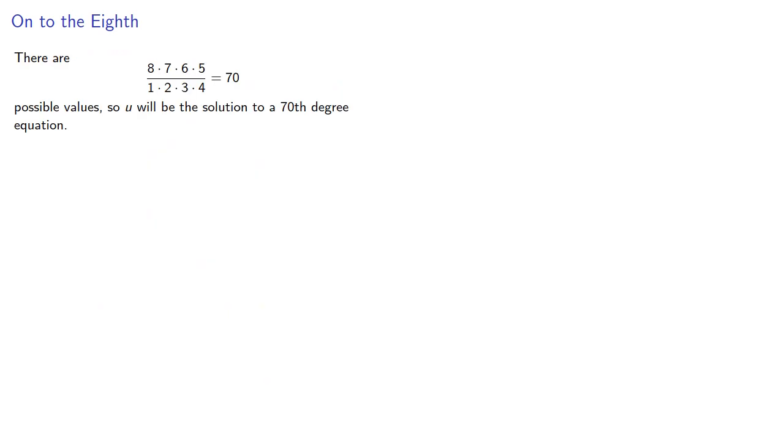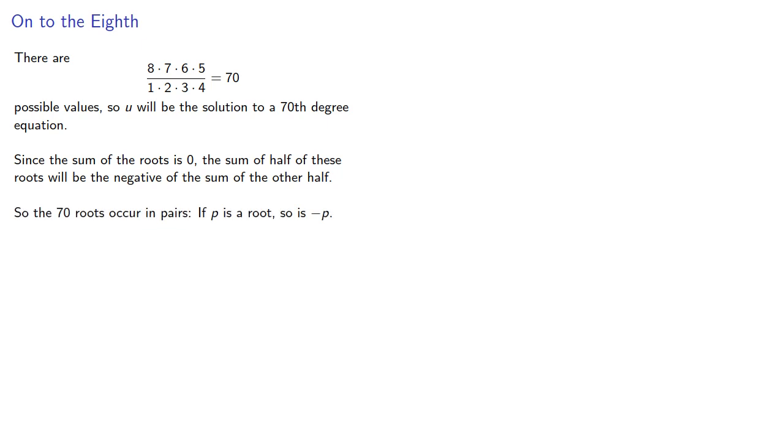There's eight choose four, 70 possible values, so u will be the solution to a 70th degree equation. Since the sum of the roots is zero, the sum of half of these roots will be the negative of the sum of the other half. So the 70 roots occur in pairs. If p is a root, so is negative p.